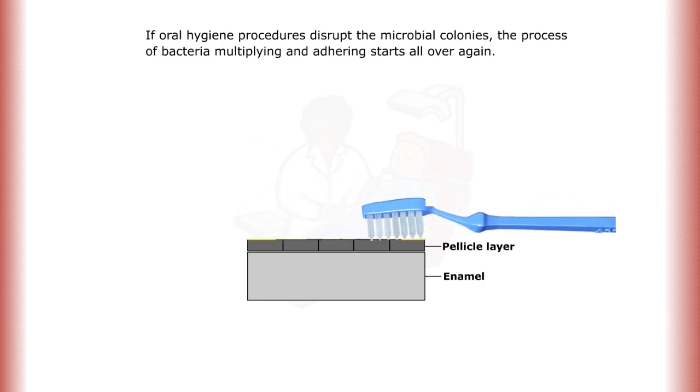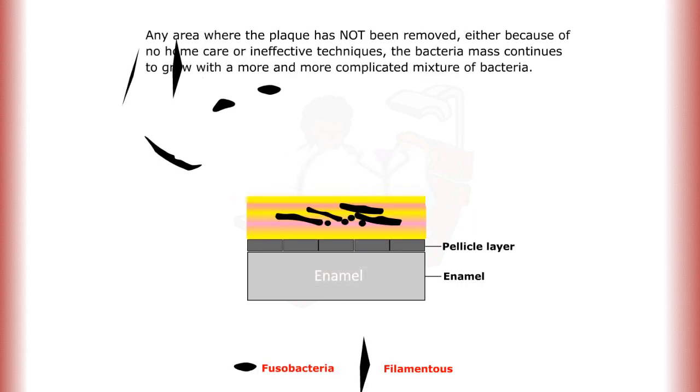If oral hygiene procedures disrupt the microbial colonies, the process of bacteria multiplying and adhering starts all over again. Any area where the plaque has not been removed, either because of no home care or ineffective techniques, the bacteria mass continues to grow with a more and more complicated mixture of bacteria.